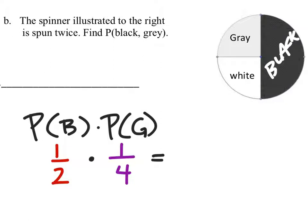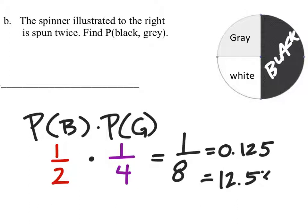And when I multiply these, I get one eighth, which is the same as 0.125, which is the same as 12.5 percent. And you do need all of these in order to get it right.